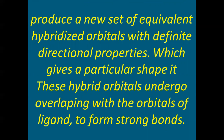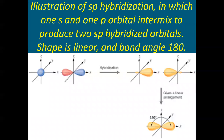These hybrid orbitals undergo overlapping with the orbitals of the ligand to form strong bonds. The central metal ion undergoes hybridization forming hybridized orbitals, and those hybridized orbitals overlap with the orbitals of the ligand to form strong bonds. This is the illustration of sp hybridization: one s orbital of the atom mixes with one p orbital, producing two sp hybridized orbitals with the same energy. The shape is linear with a bond angle of 180 degrees.